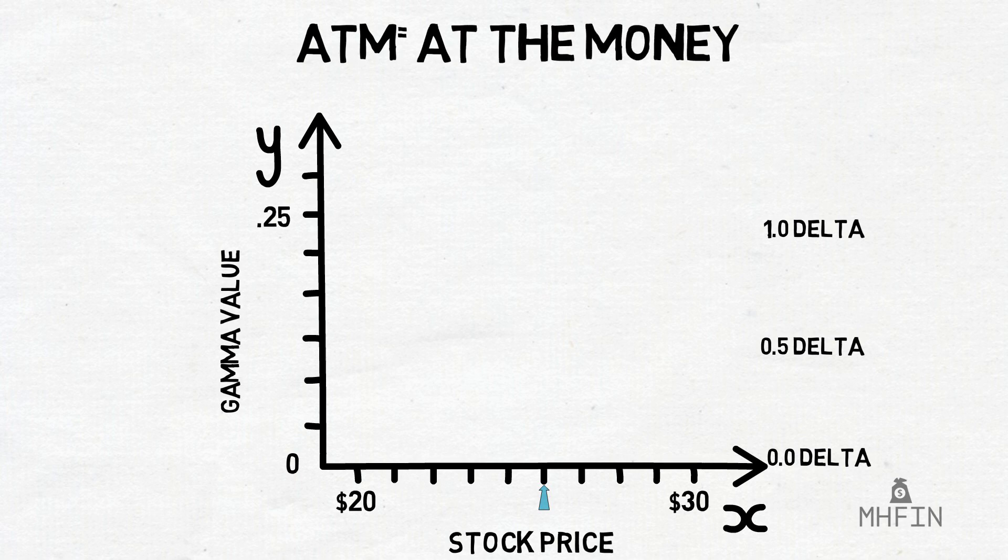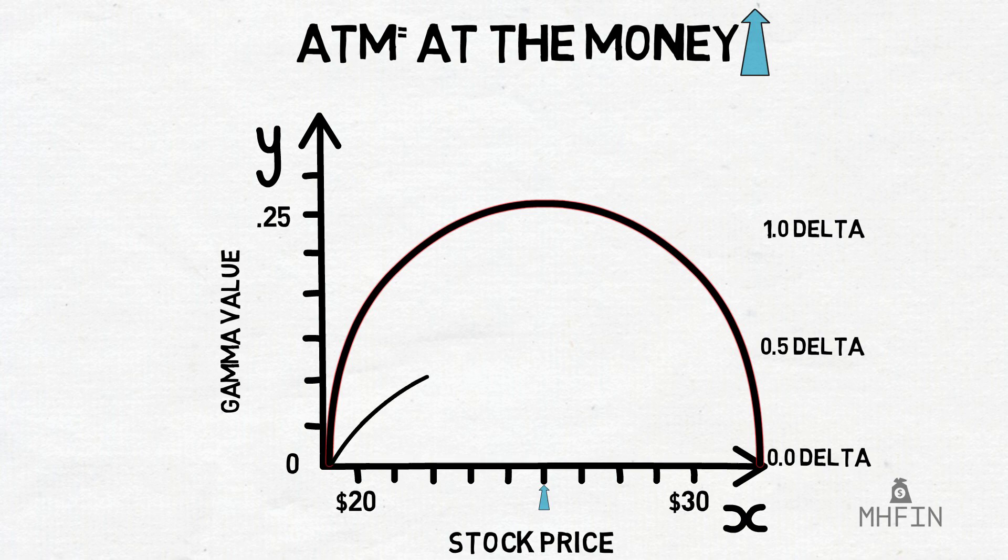Now let's add the lines. The red line represents gamma values which correlate to the values on the left y-axis, while the green represents the delta value which correlates to the values on the right side of the y-axis.